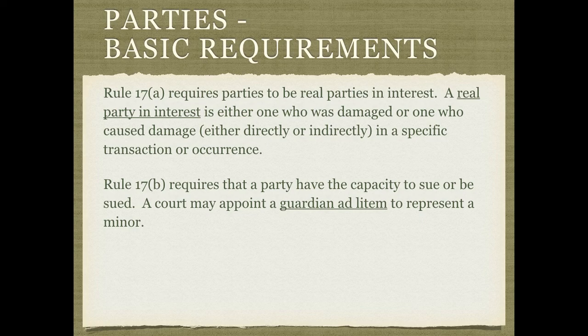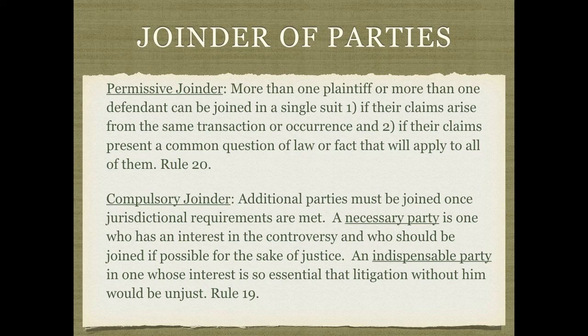Now, if I killed grandma, then grandma's heirs — her relatives, her children, her spouse — those people have a wrongful death action against me, but not the neighbor. Rule 17(b) requires that a federal party have the capacity to sue or be sued. You can't be a minor and sue on your own — you have to have a guardian ad litem. You can't be mentally incompetent — you're going to have to have a guardian. You have to have the capacity to sue.